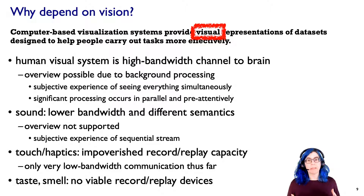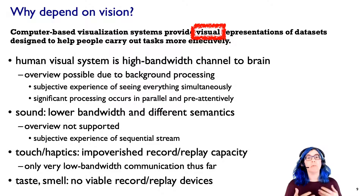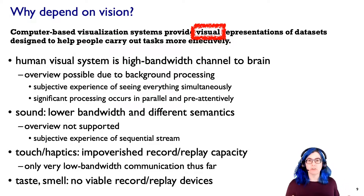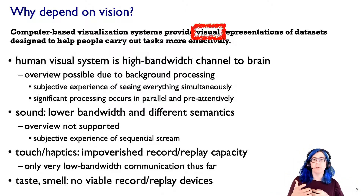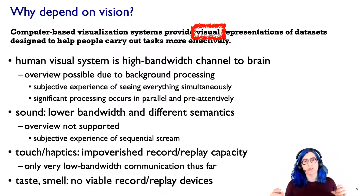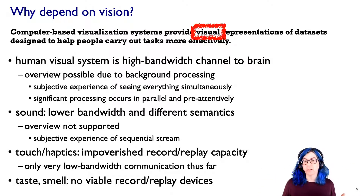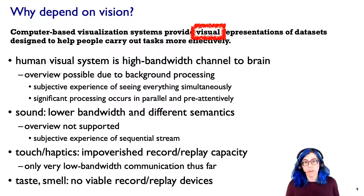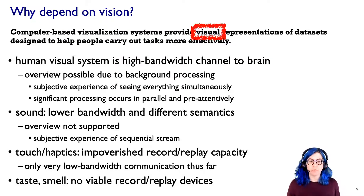In contrast, something like sound — we experience it sequentially. When we listen to a song, it is a thing elapsed over time. Yes, you can hear multiple notes at once with chords or multiple instruments, but you perceive sound sequentially, whereas you perceive vision as a subjective experience of simultaneity. That is a really important capability for getting an overview of things, completely crucial for a lot of how we use visualization.